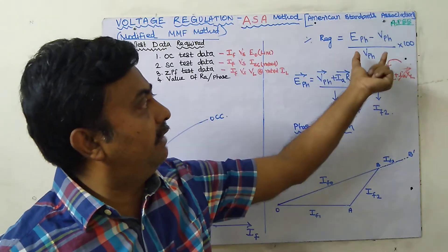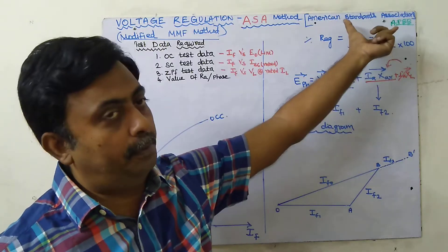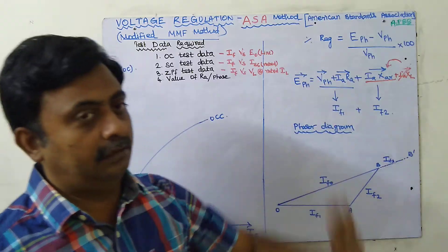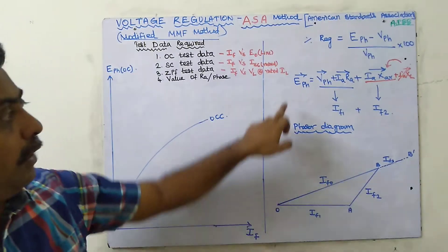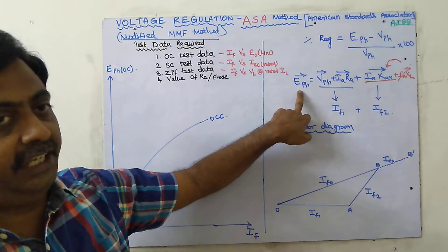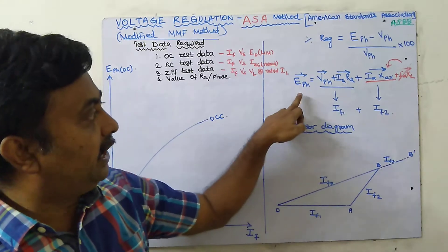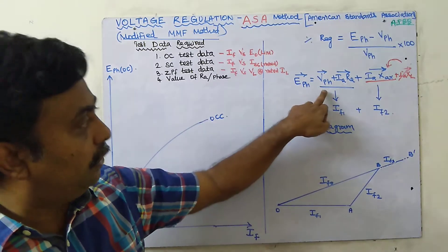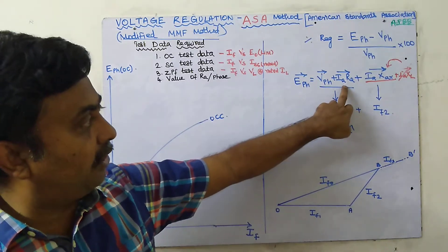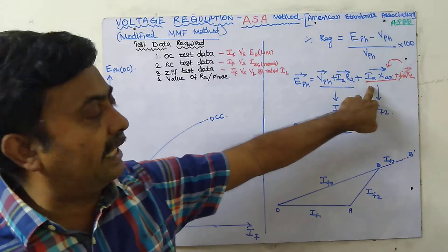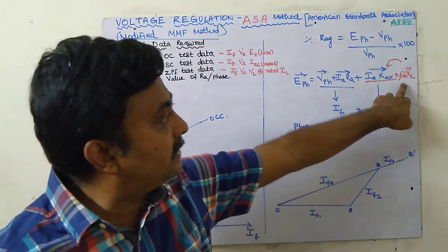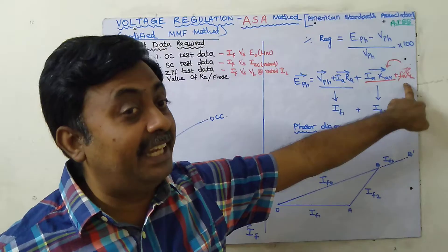Voltage regulation is the voltage drop divided by rated voltage, into 100. The no-load voltage, E-phase, equals rated load voltage V-phase plus IA·RA drop plus IA·XA drop — that is, armature resistance drop plus armature leakage reactance drop.